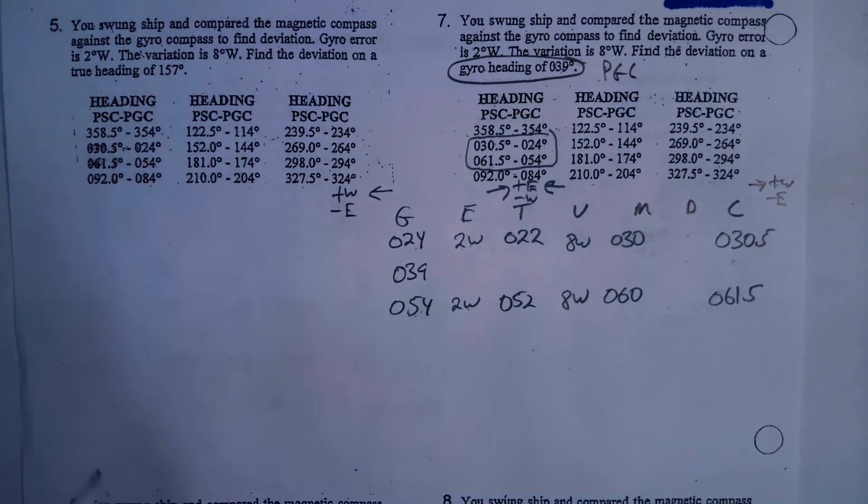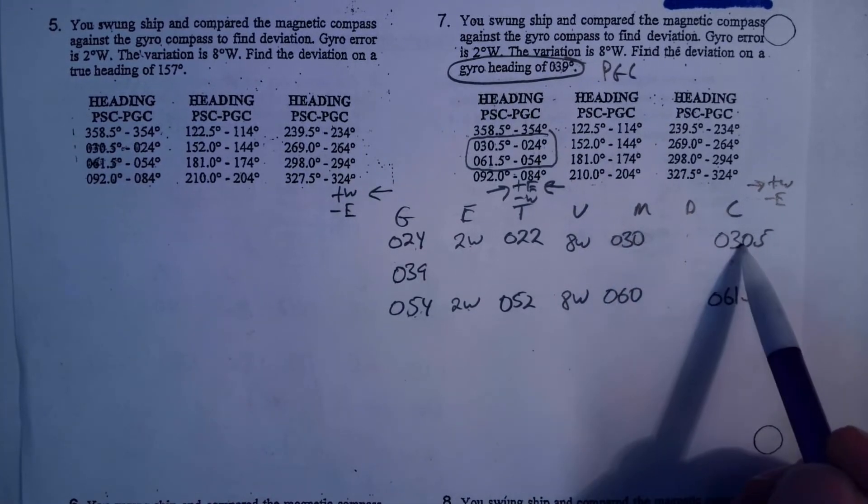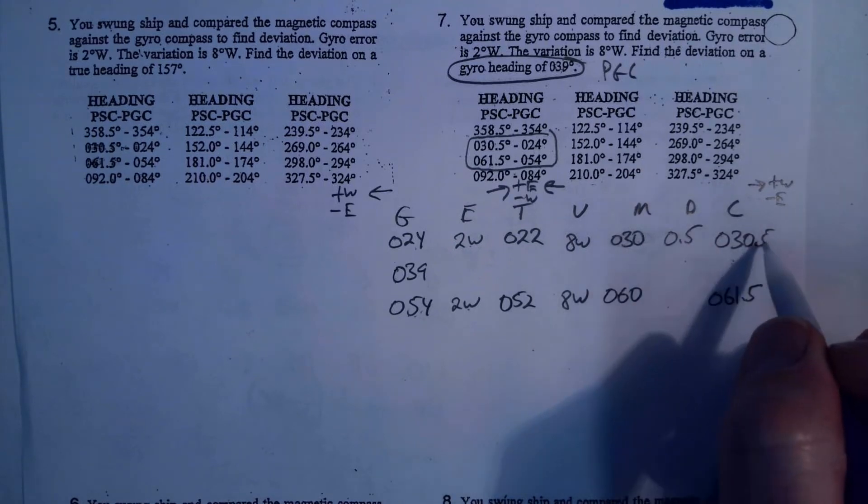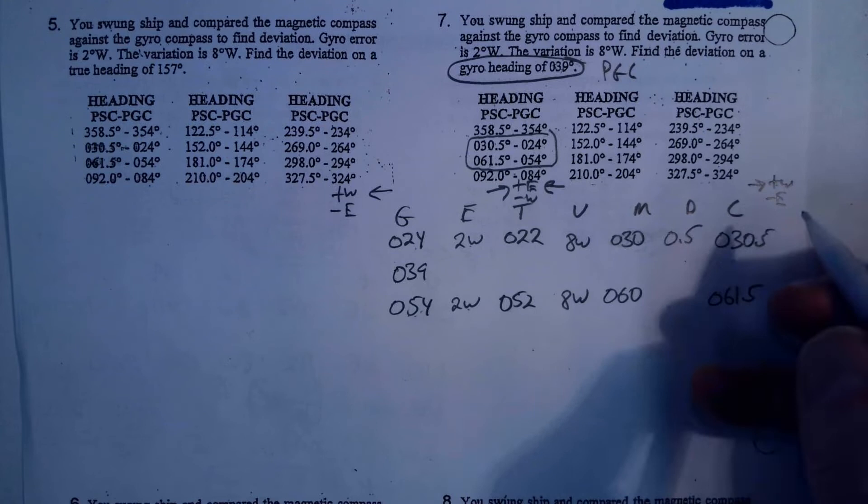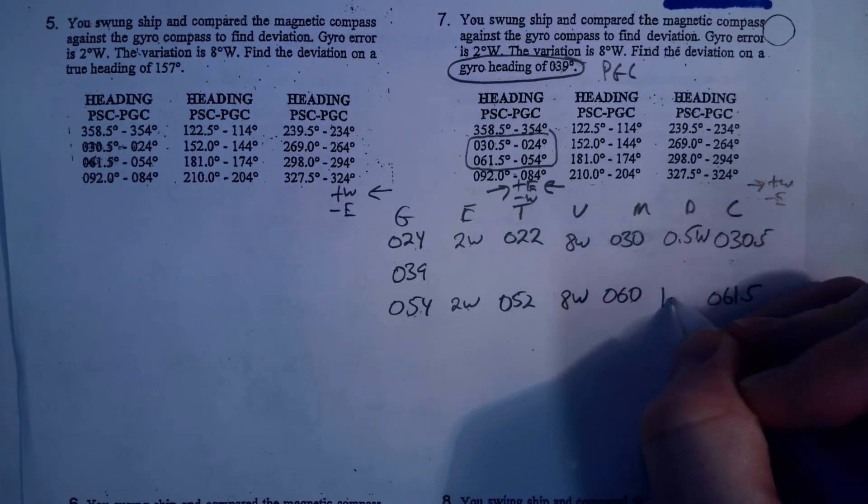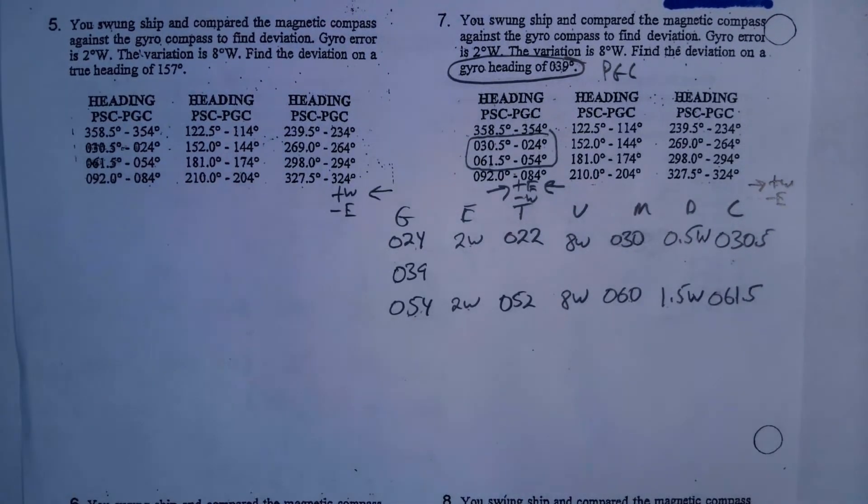Now, what's the next thing? Let me calculate my deviation. So, 30 to 30.5, the difference is 0.5. Now, what did I do? I added the 0.5. To go from 30 to 30.5, I had to add. Add is west, so it's west. And 60 to 61.5, that's 1.5, and I went from 61.5, I had to add the 1.5, that's west.